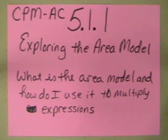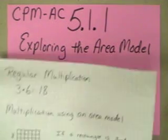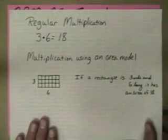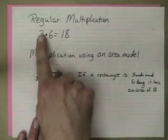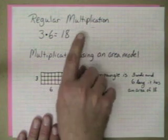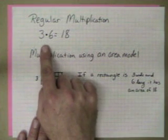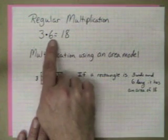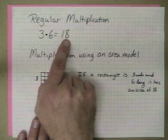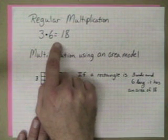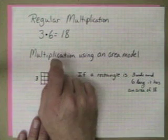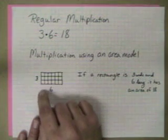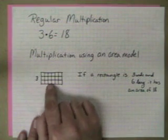So what is this area model and how do we use it to multiply expressions? Let's try to relate to something we kind of already know. In regular multiplication, the kind you've learned since whenever they taught you that, 3 times 6 equals 18. Well, there's another way that we can show that 3 times 6 equals 18. We call it the area model.